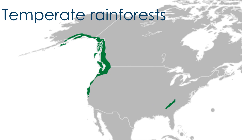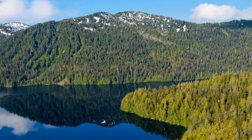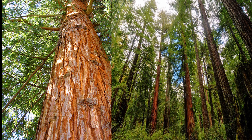Temperate rainforests are home to a rich diversity of species, many of which are found nowhere else in the world. It covers the Pacific coast of Alaska, Yukon, and British Columbia, and the west coast of the United States. The landscape is complex with islands and fjords, and many species depend on both the forest and the ocean. You will find the tallest and oldest western red cedar and redwood trees.